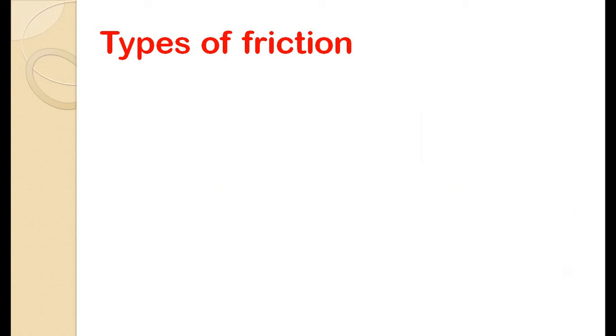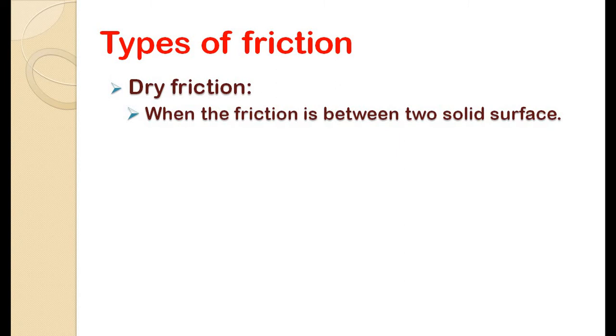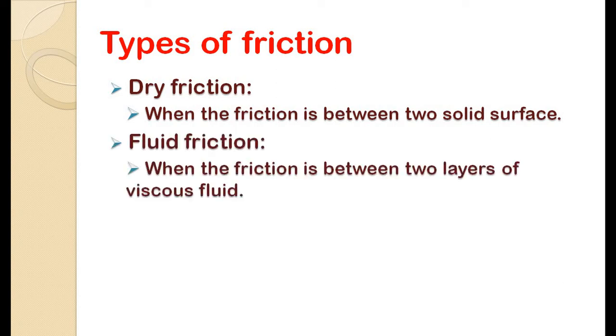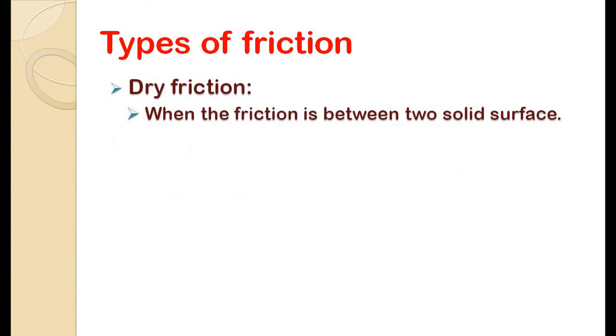So dry friction is when two solid surfaces are in contact with each other. The best example which we saw in our example is when the wooden box starts to slide over the table. It is one of the types of dry friction.